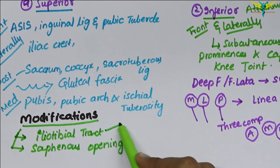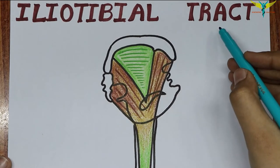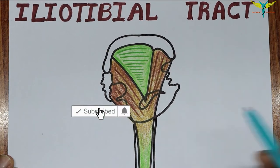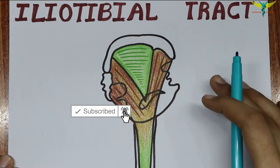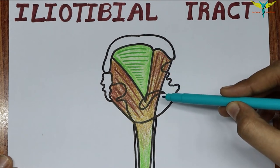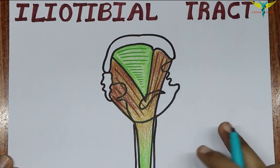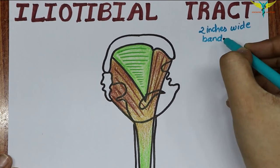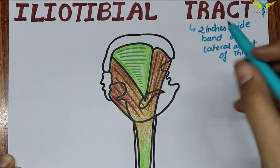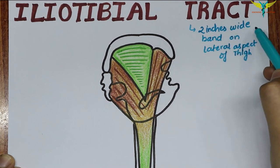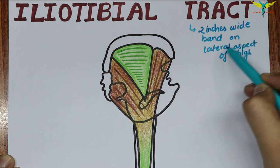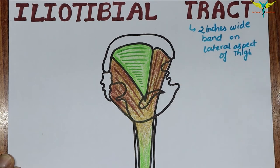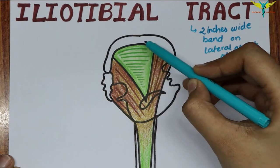The first modification is the iliotibial tract. The iliotibial tract is the modification of the fascia lata in which the fascia lata is thickened on the lateral aspect of the thigh to form an approximately two-inch wide band called the iliotibial tract. It is present on the lateral aspect of the thigh and is formed by the fascia lata.